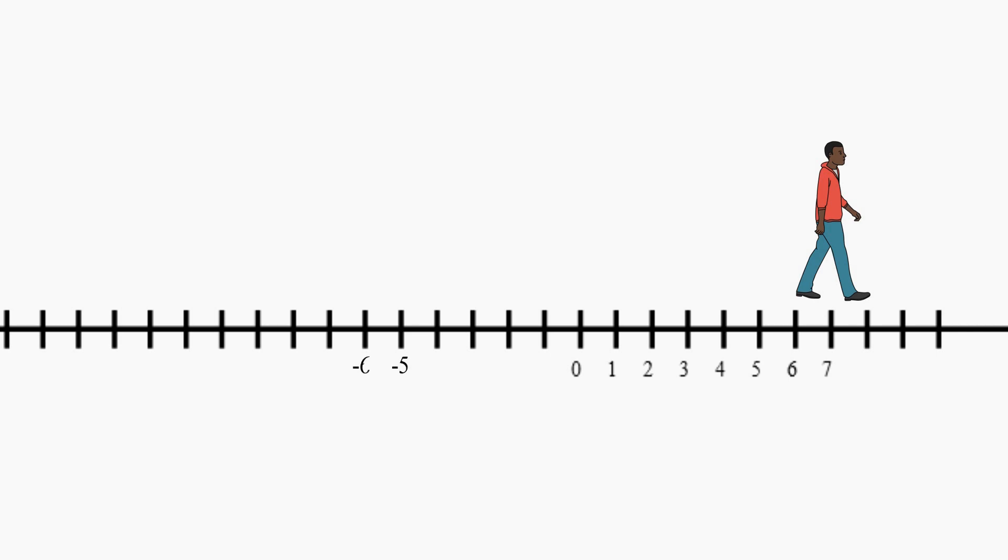And every number that you count has an opposite, a negative number, which is a number that is less than zero. If we were walking down past the negative numbers, we could also count negative 5, negative 6, negative 7.